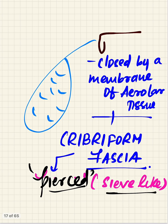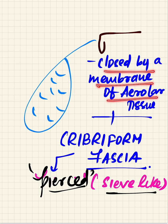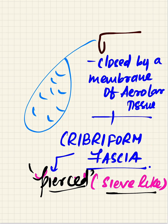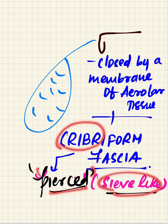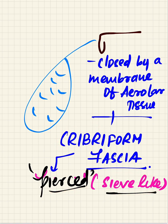This opening is closed by a membrane of areolar tissue called the cribriform fascia. The term 'cribriform' comes from Greek meaning 'pierced,' giving a sieve-like appearance. This areolar tissue is pierced by many structures, giving it that sieve-like appearance — hence it is called the cribriform fascia.